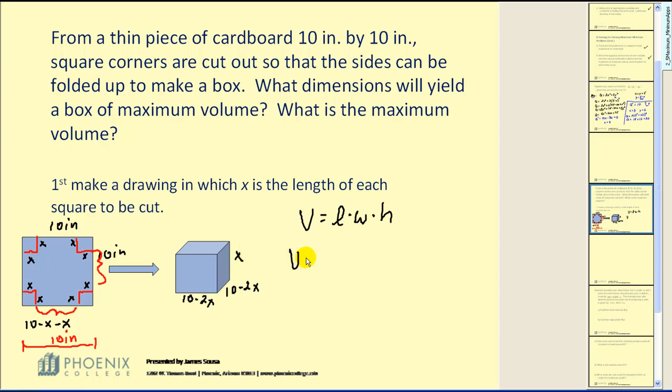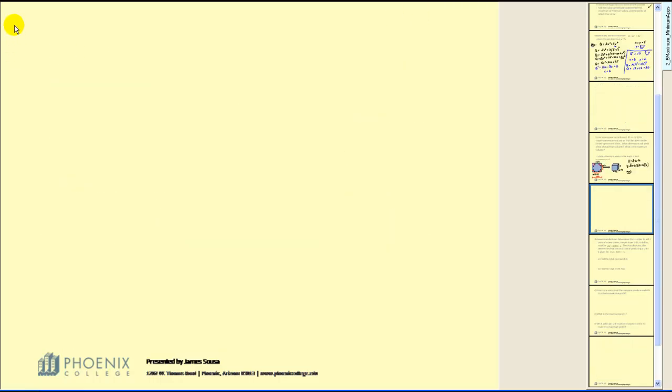So our volume formula is equal to 10 minus 2x times 10 minus 2x times x. Let's multiply the two binomials first. All of this times x.